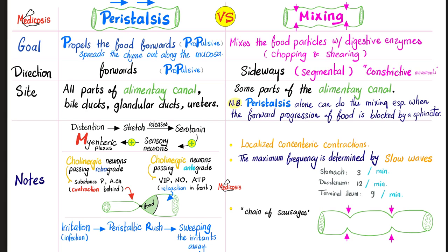Extra notes on peristalsis: food causes distension of the gut, which causes stretch. Stretch releases local chemicals such as serotonin. Serotonin activates sensory neurons, and then you have a reflex — sensory neurons trigger the motor neurons. That reflex usually happens via the sympathetic nervous system — remember the pre-vertebral ganglia such as the celiac plexus, superior mesenteric plexus, and inferior mesenteric plexus, collectively known as the aortic plexus.